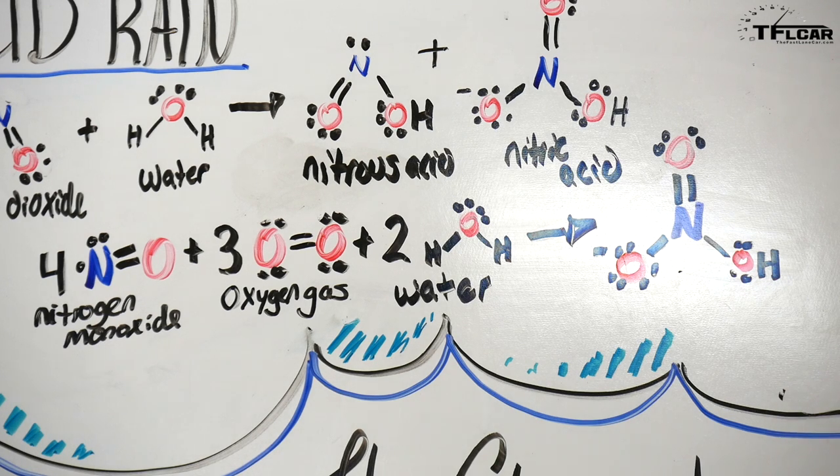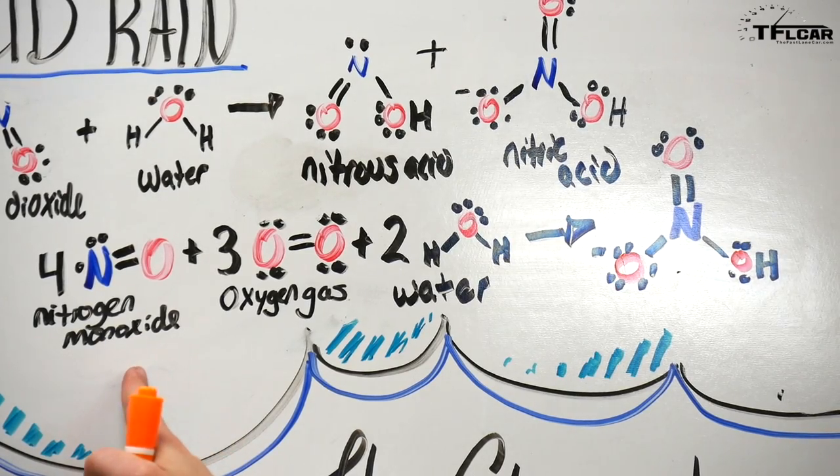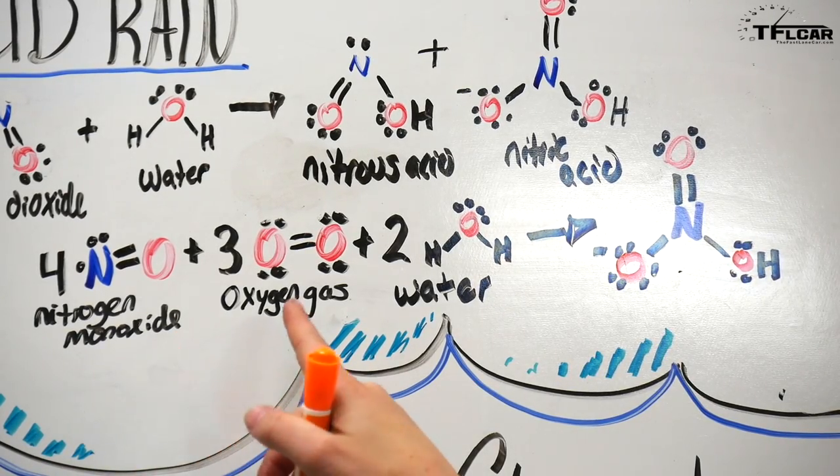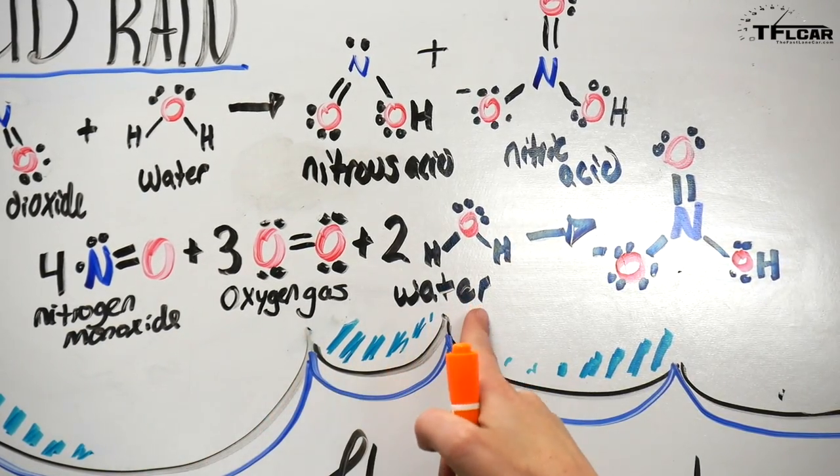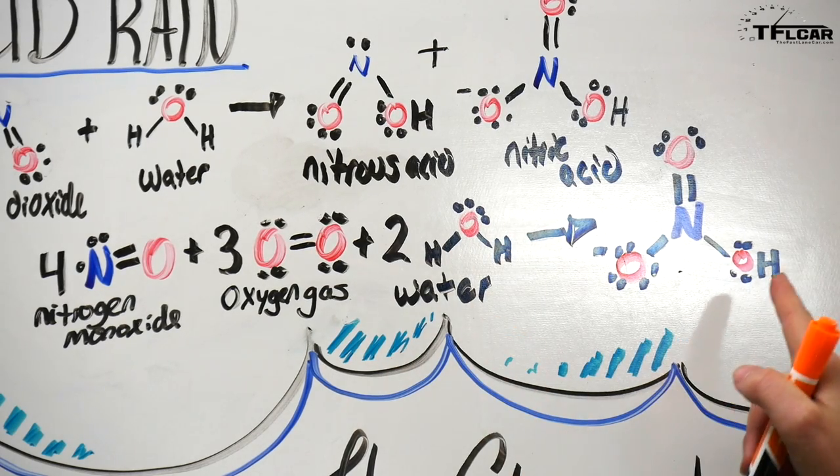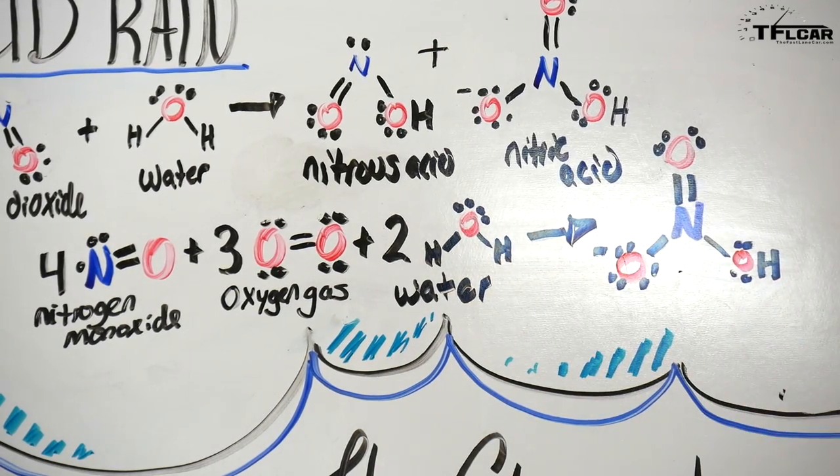And again, since we've covered nitrogen dioxide, we have to cover what nitrogen monoxide did. So if you have four molecules of nitrogen monoxide reacting with three molecules of oxygen gas and two molecules of water, you're going to get four nitric acid molecules out of that.